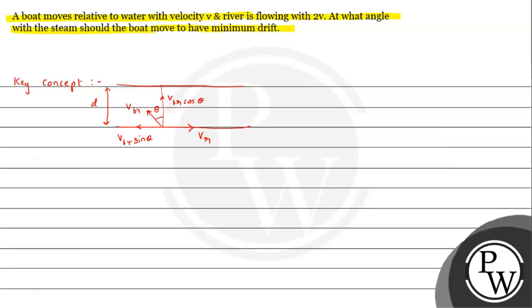From this situation, we can calculate the time to cross the river. Time equals distance divided by the speed responsible for crossing the river, which is v_br·cos θ. So the time taken to cross the river is t = d / (v_br·cos θ).